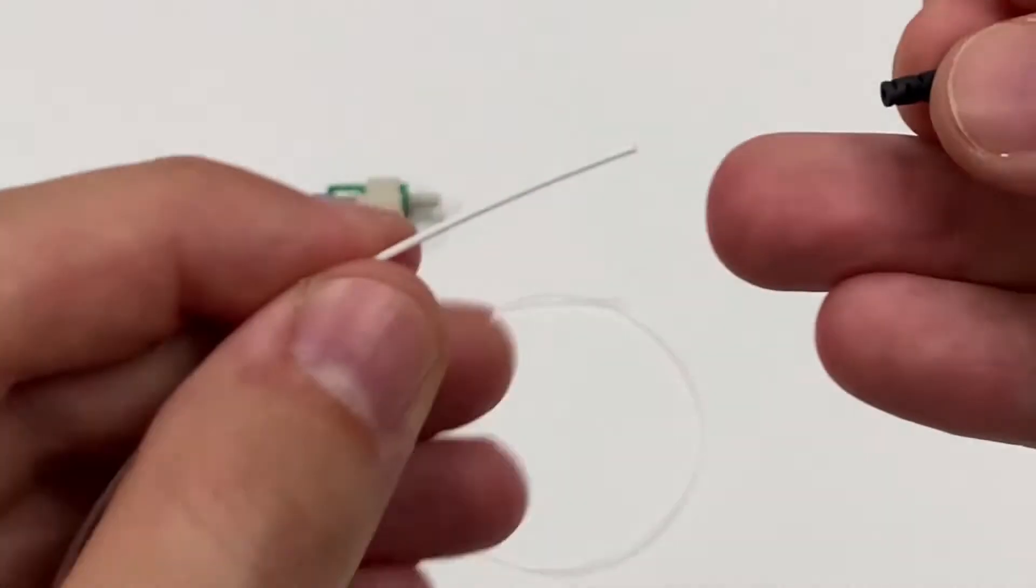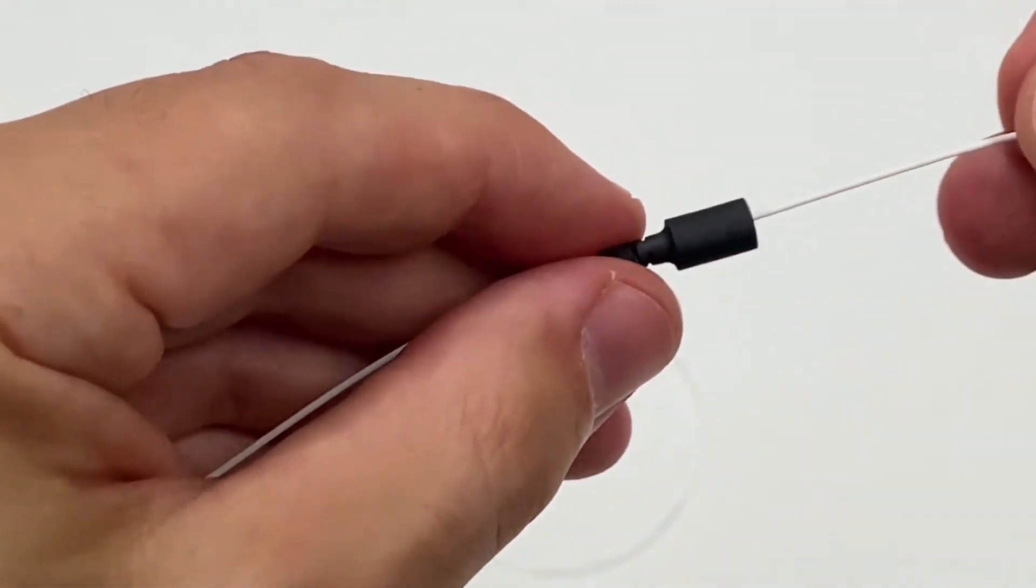For 900 micron termination, place the 900 micron boot onto the cable.